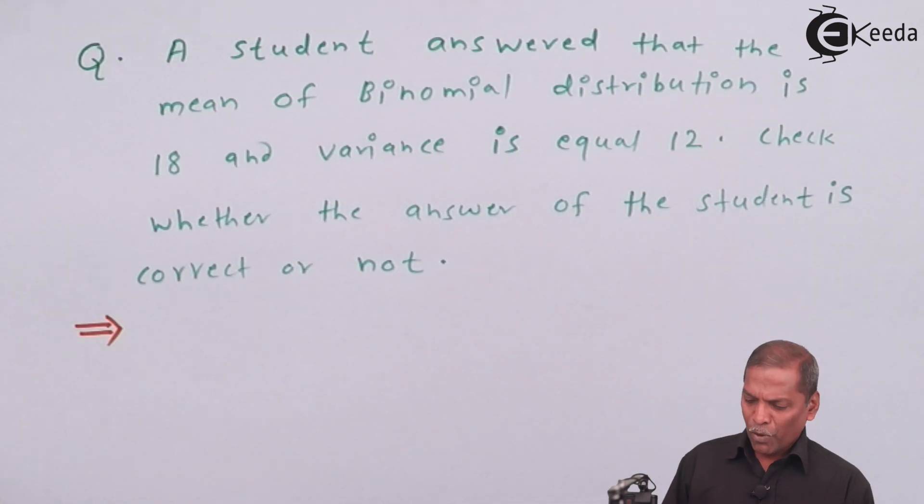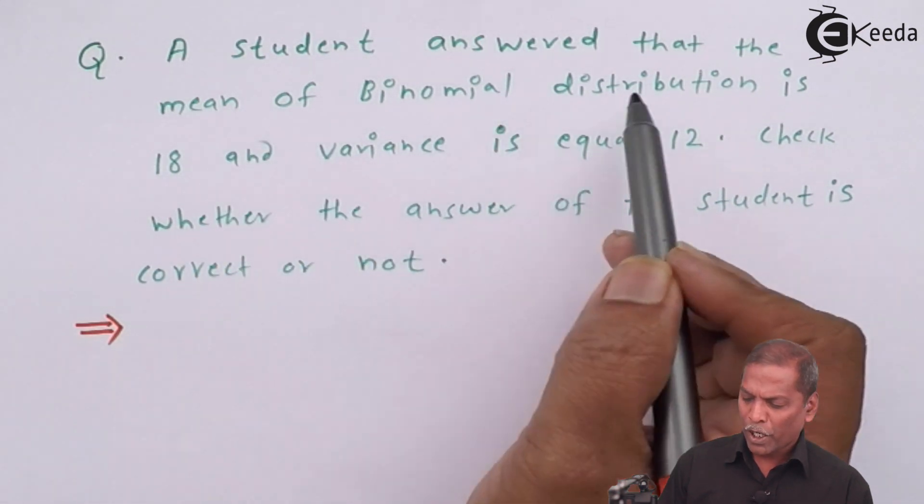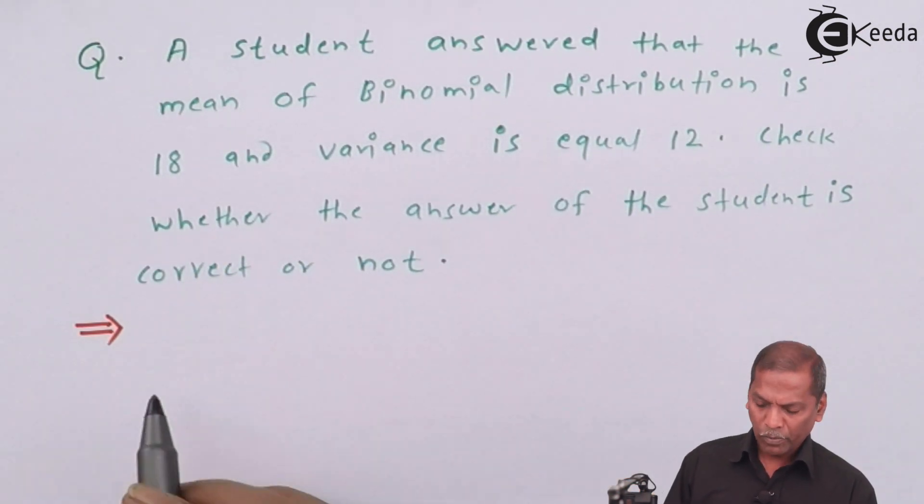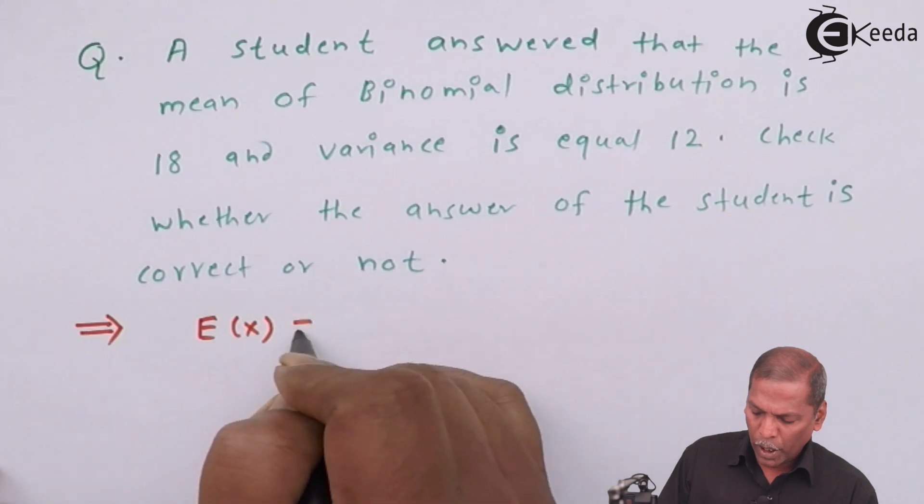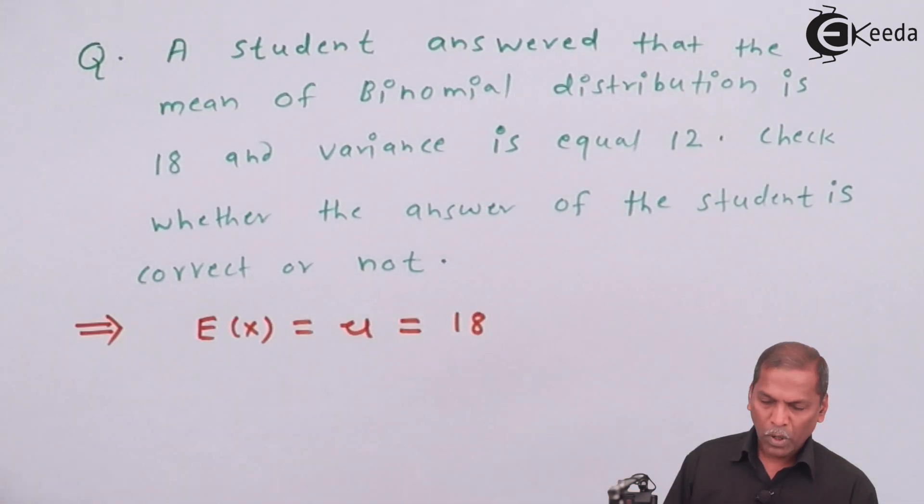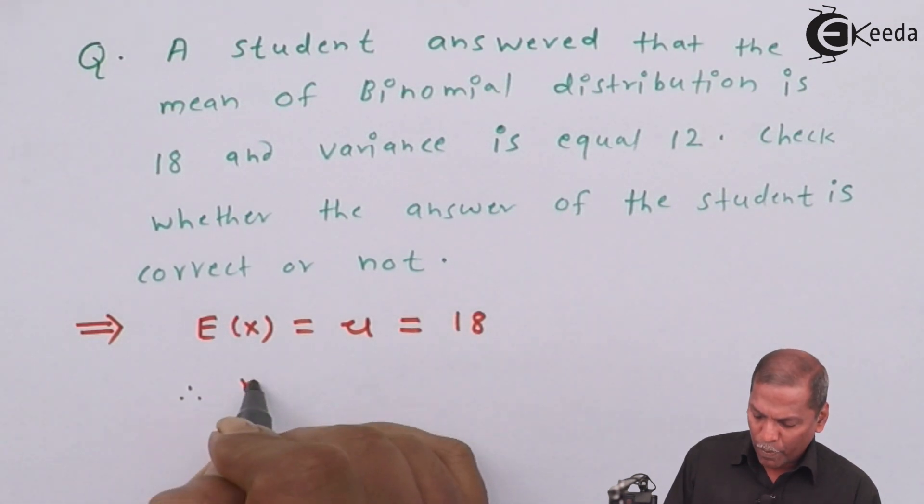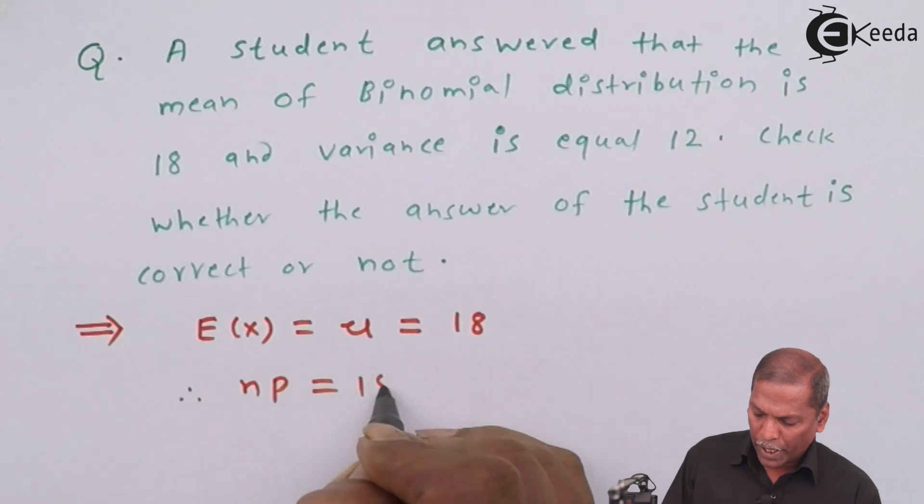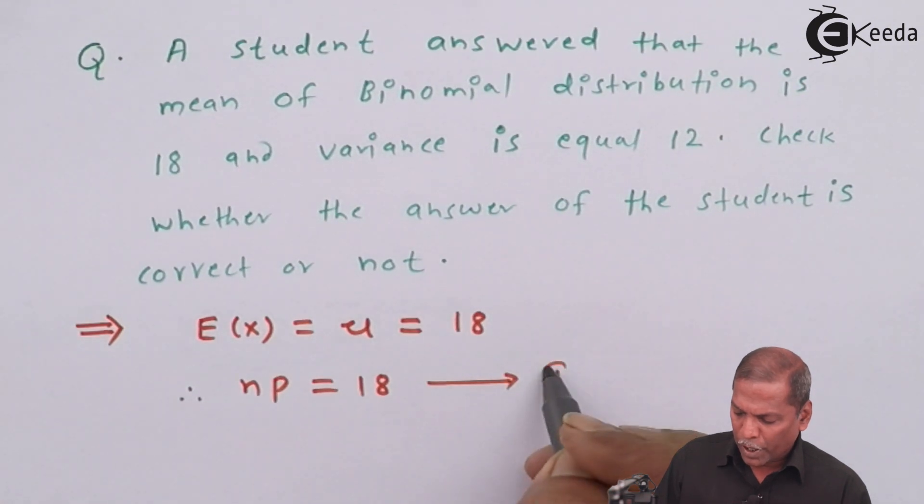Solution. Now in this question, first of all, we have given the mean of a binomial distribution is 18. It means E(x) is equal to μ is equal to 18. Now the formula for E(x) that is mean is np. Therefore, the next step will be np is equal to 18. Let us denote as the equation 1.